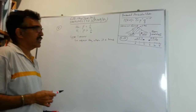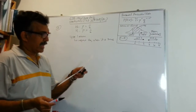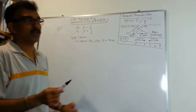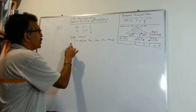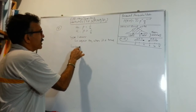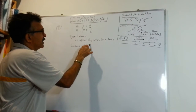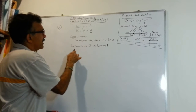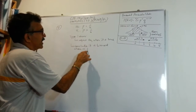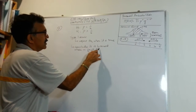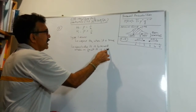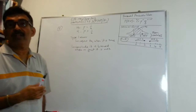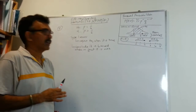In our case, they ask you to explain the type one error in this situation. So basically, you're going to conclude that the die is biased when in fact it is not. You're going to conclude that it's biased when actually it is not.